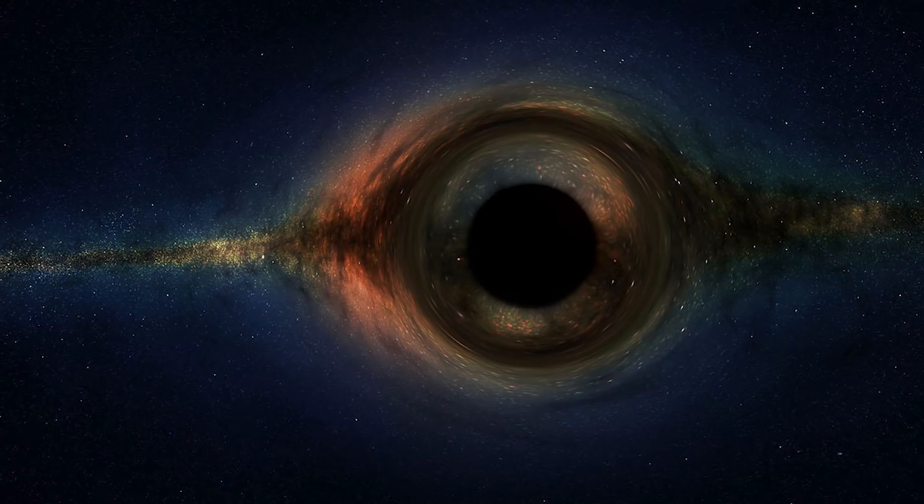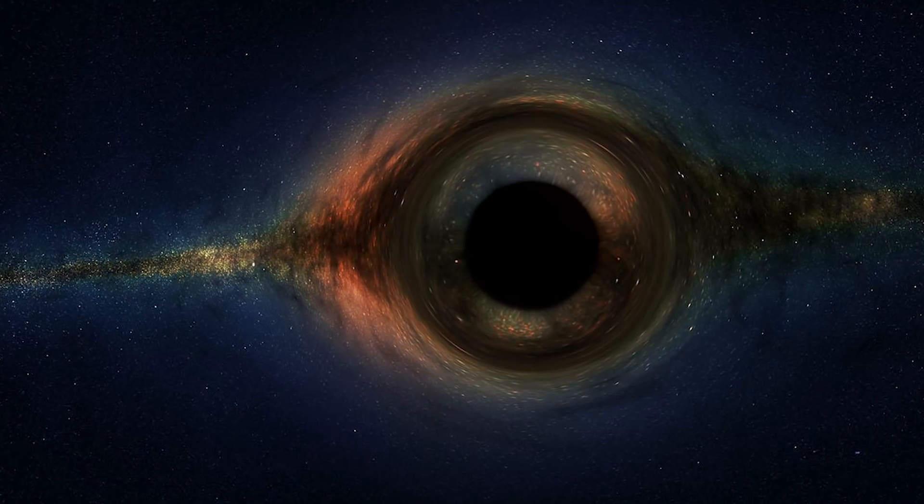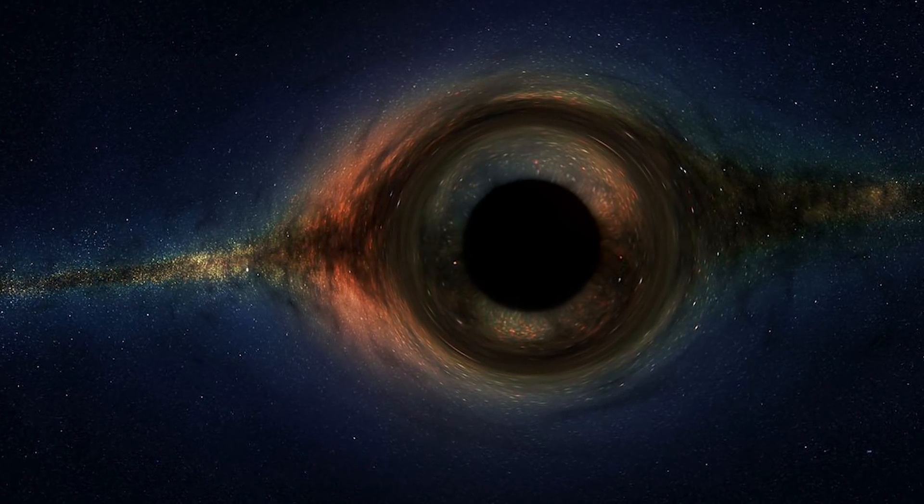Lee Smolin, a theoretical physicist based at Canada's Perimeter Institute for Theoretical Physics, has stated that when a star collapses into a black hole, it very quickly squeezes down to infinite density and time stops.